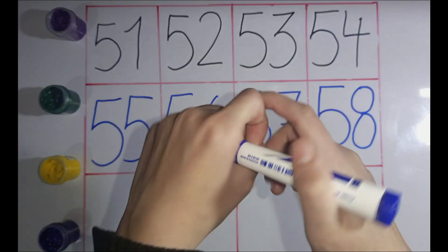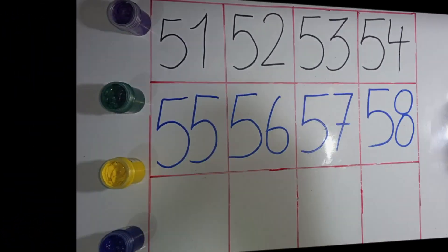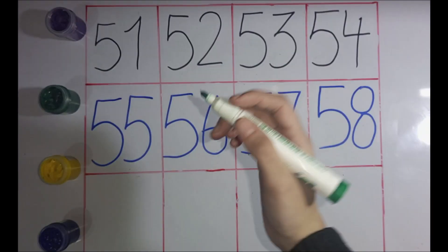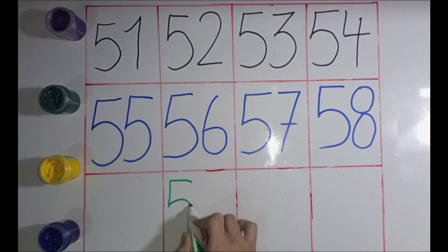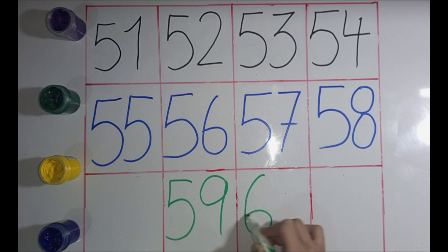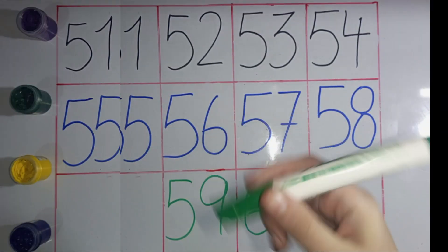Blue color. Green color. So, 5, 9, 59. 6, 0, 60. Green color.